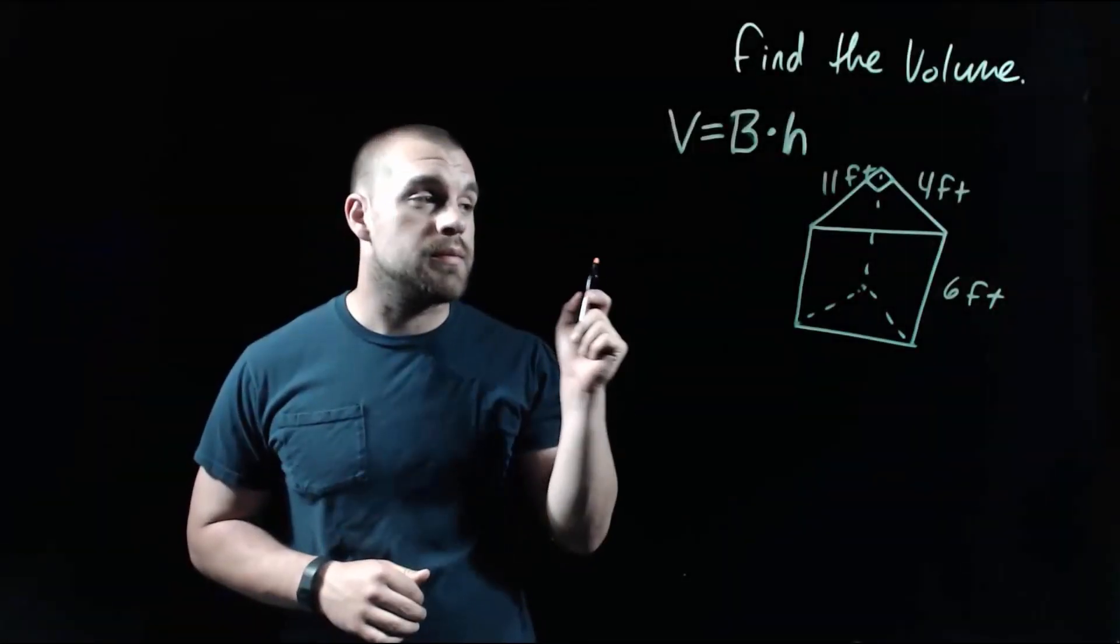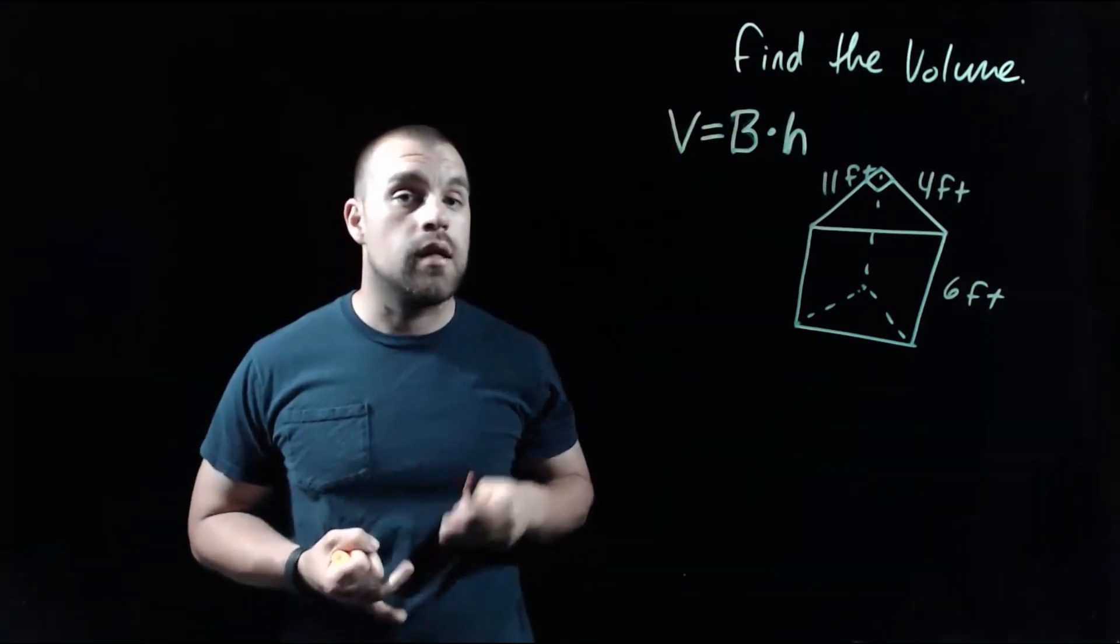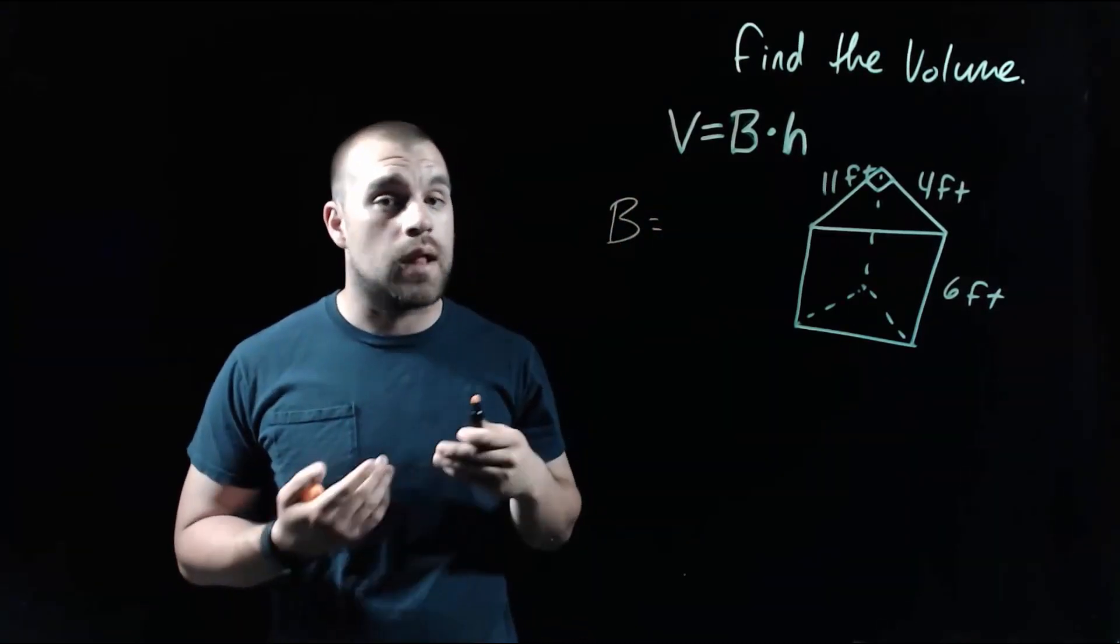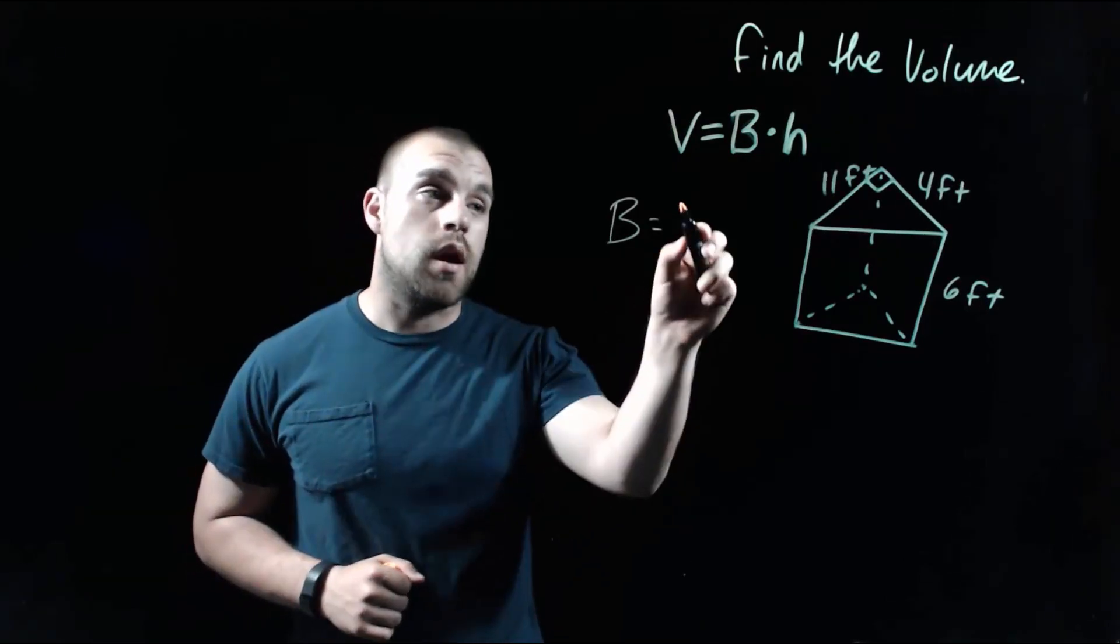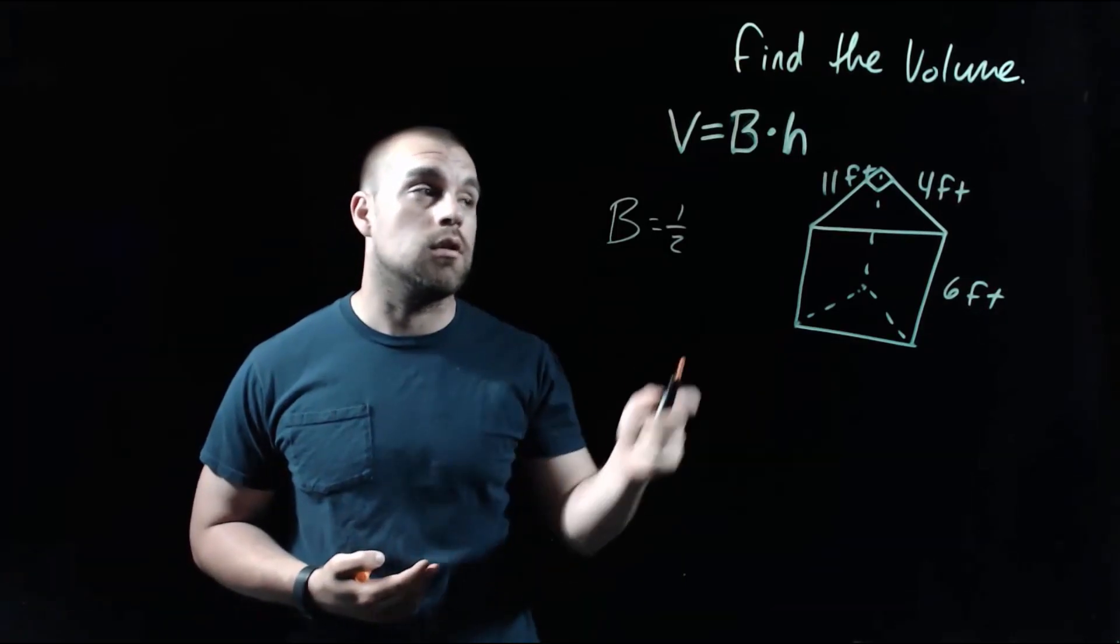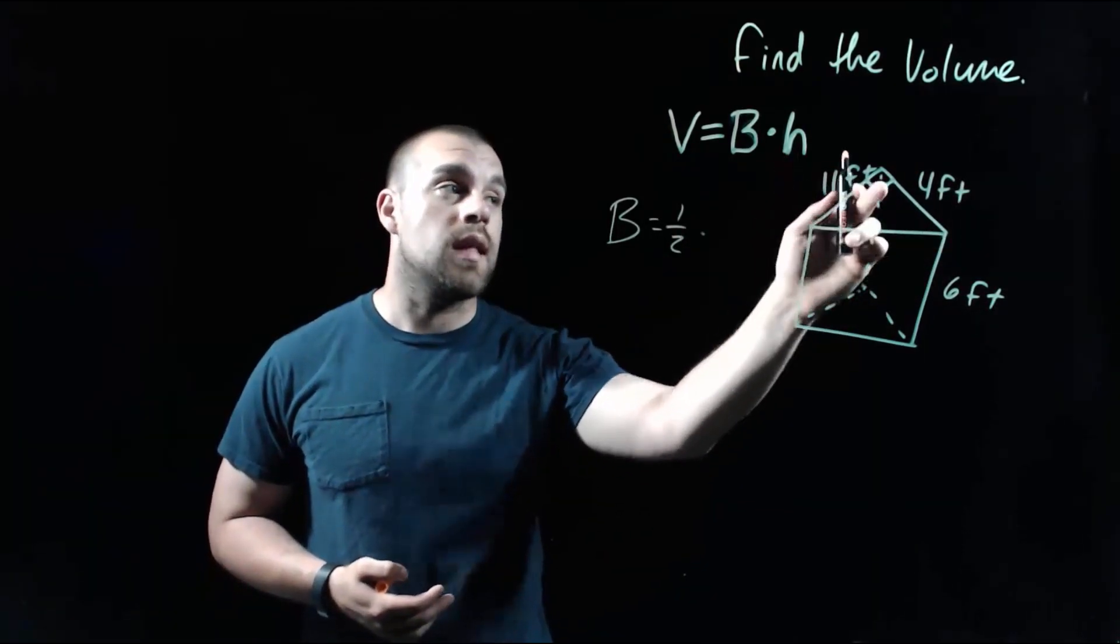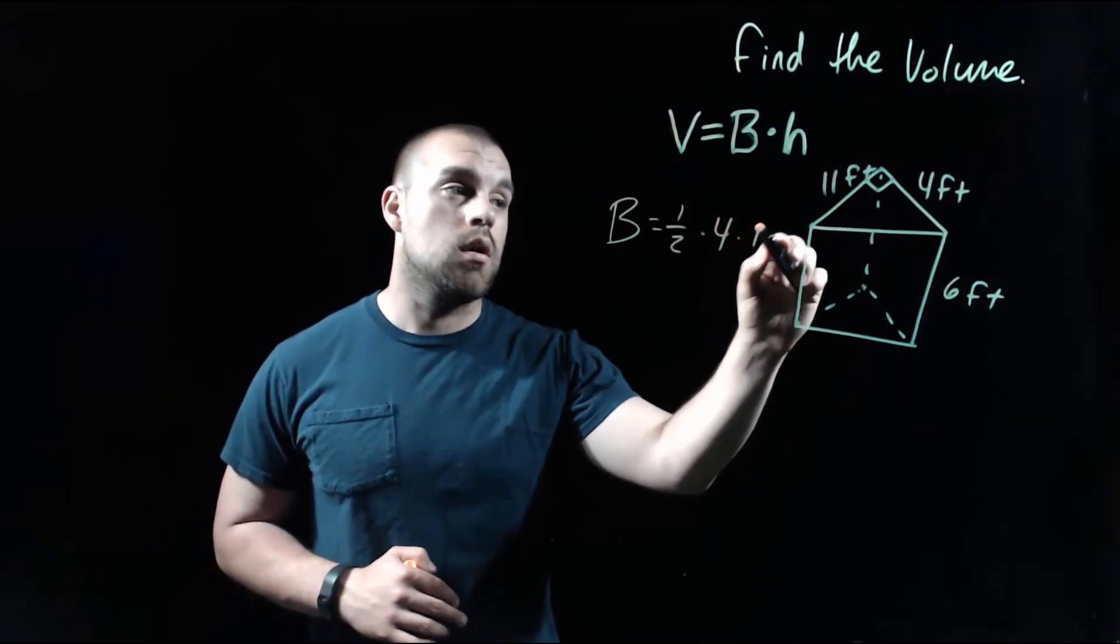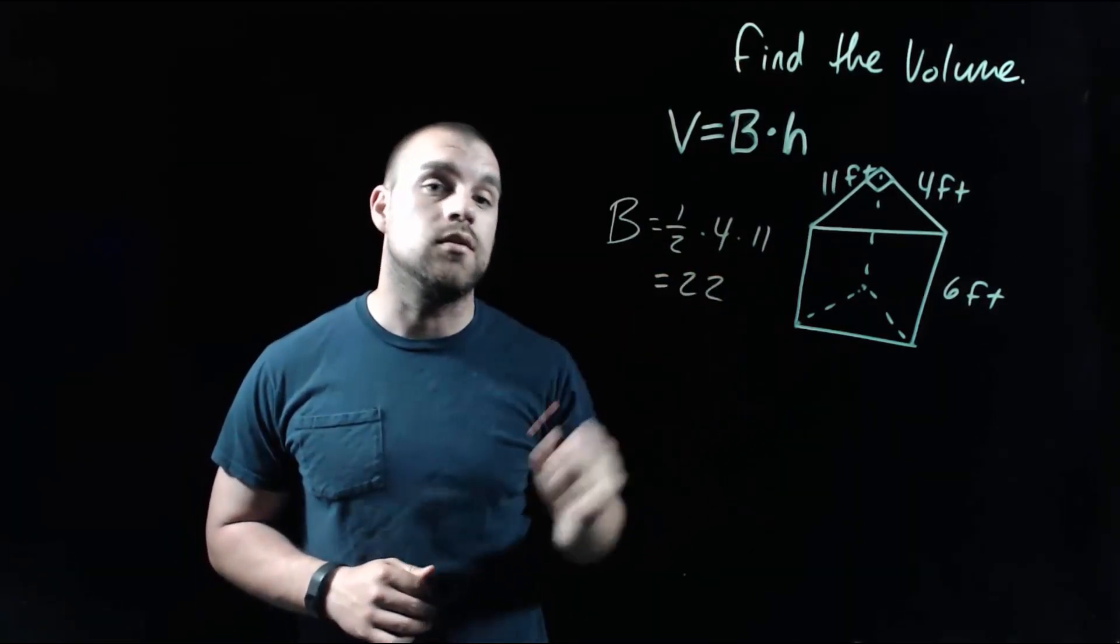As we're looking at this prism, this one is a triangular prism, but we're still going to use the same exact formula: area of the base times the height. Since we have triangular bases, we'll have to adjust how we find the area of that base. In order to find the area of a triangle, we go one half base times height, and the base and the height of a triangle have to be perpendicular. As we're looking at our triangle on the top, the four foot length and the 11 foot length make the right angle. So we're going to go one half times four times 11. Well, half of four is two, and two times 11 is 22.